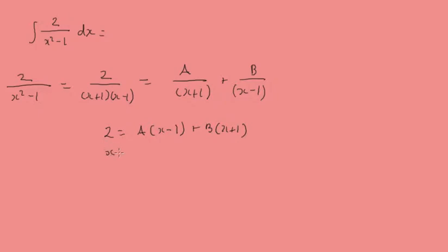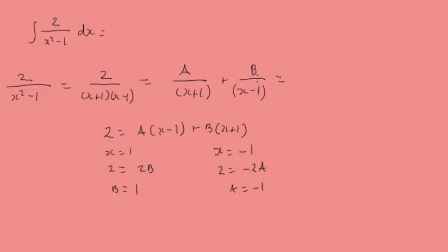Now let x equal 1, so we get 2 equals 2B, therefore B equals 1. Then let x equal minus 1, so we get 2 equals minus 2A, therefore A equals minus 1. That gives us the partial fractions as 1 over (x minus 1) minus 1 over (x plus 1).